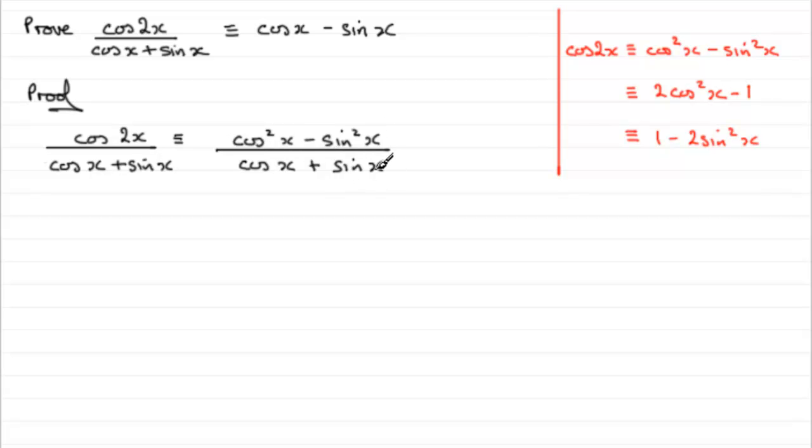So we haven't got any common factors as yet. Can we factorize cos squared x minus sine squared x? Yes, it's the difference of two squares. That means it's going to go into two brackets: cosx plus sinx multiplied by cosx minus sinx. Difference of two squares tends to come up quite a lot in identities, so look out for that.